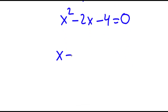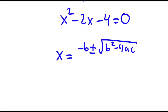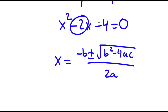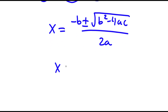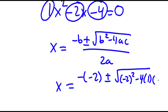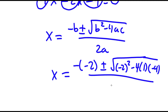To solve this I'm going to use the quadratic formula, which is negative b plus or minus the square root of b squared minus 4ac all over 2a. In this case b is negative 2, a is 1, and c is negative 4. So I have x is equal to negative negative 2 plus or minus the square root of negative 2 squared minus 4 times 1 times negative 4, all over 2 times 1.